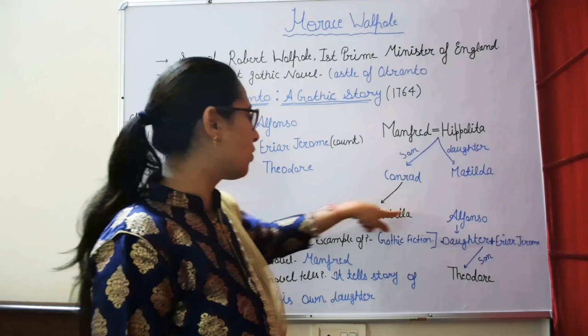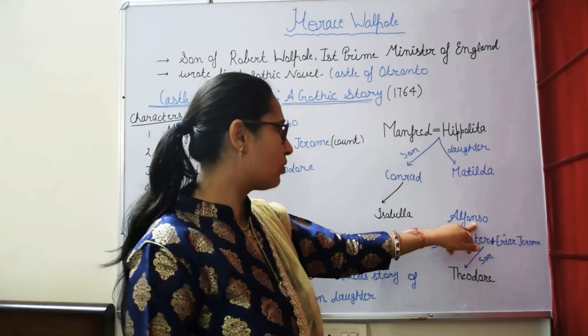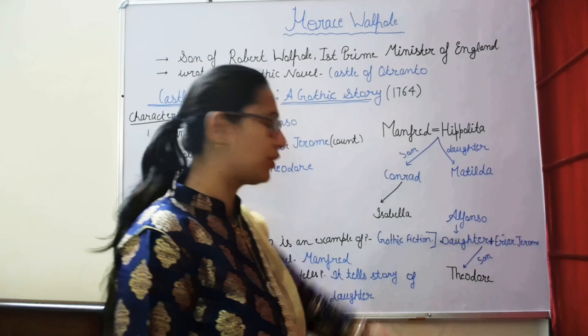Mathilda is Manfred's daughter. On the other side, Theodore is the son of Alfonso's line and Friar Jerome. You can see these characters in the diagram.